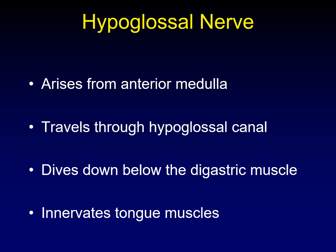Our 12th and final cranial nerve is the hypoglossal nerve. It arises on the anterior aspect of the medulla and has its own personal canal, the hypoglossal canal — though a small artery and some veins run through there as well. Once it leaves the skull, it dives down, takes a tortuous course below the digastric muscle, and then comes back up into the tongue. This extensive, scenic route through the upper neck exposes the hypoglossal nerve to injury, particularly from surgeries in the neck, so we often see hypoglossal denervation because of this needlessly complex course.